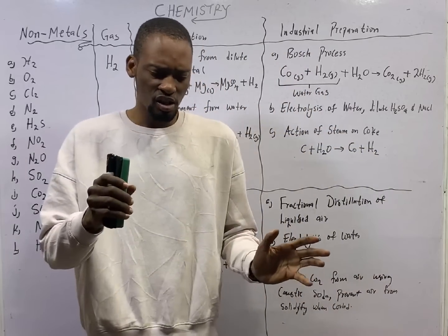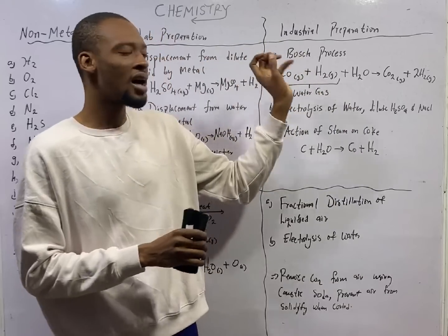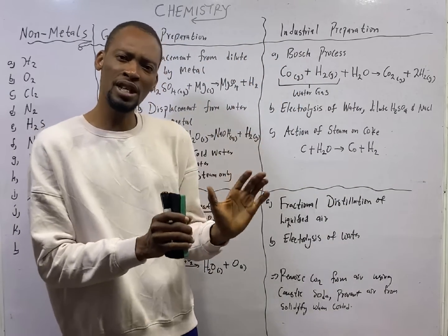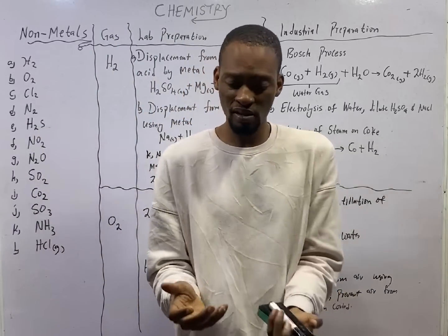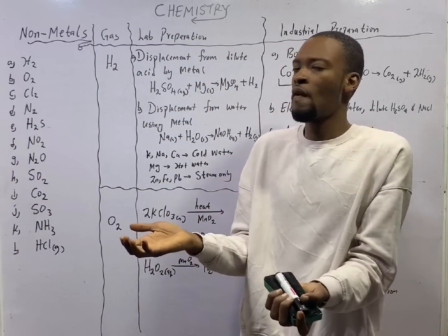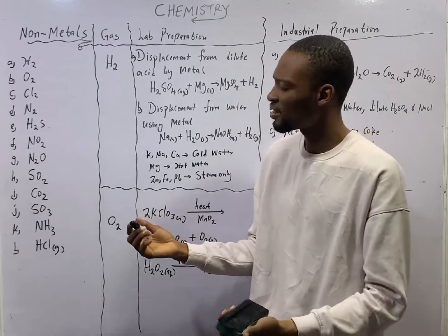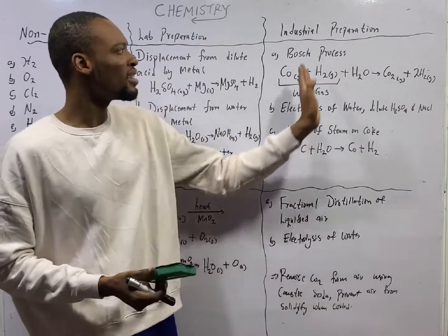To prepare any compound, there are two different methods: the laboratory method and the industrial method. Laboratory preparation is used to prepare elements or compound in small quantity. But if you want to produce on a large scale for selling, for export, for business, you therefore need to prepare in the industry.